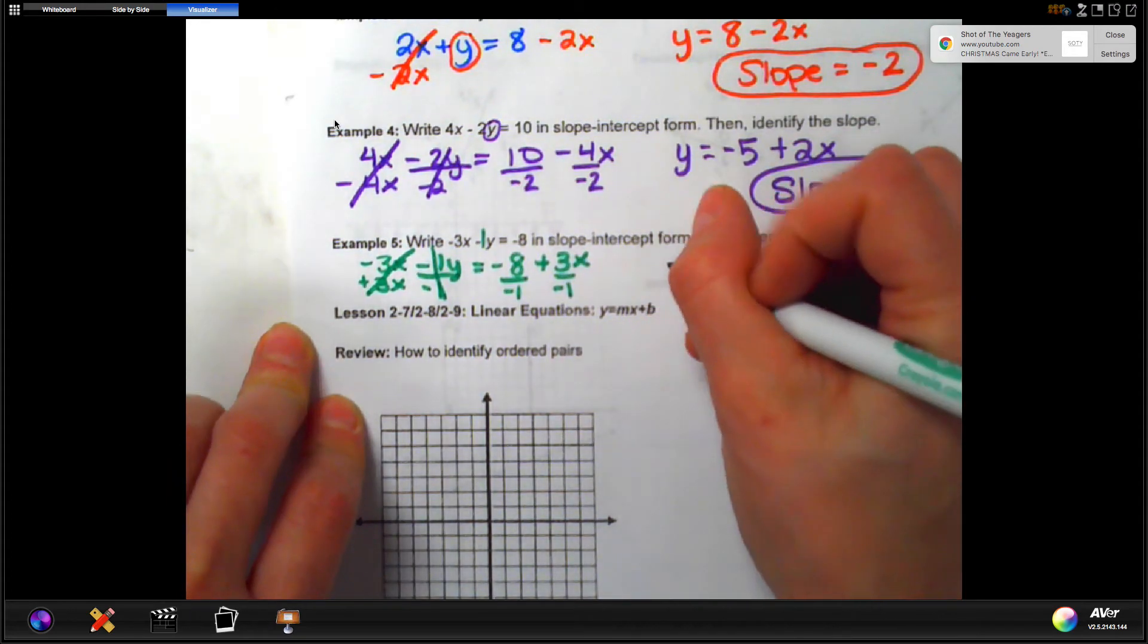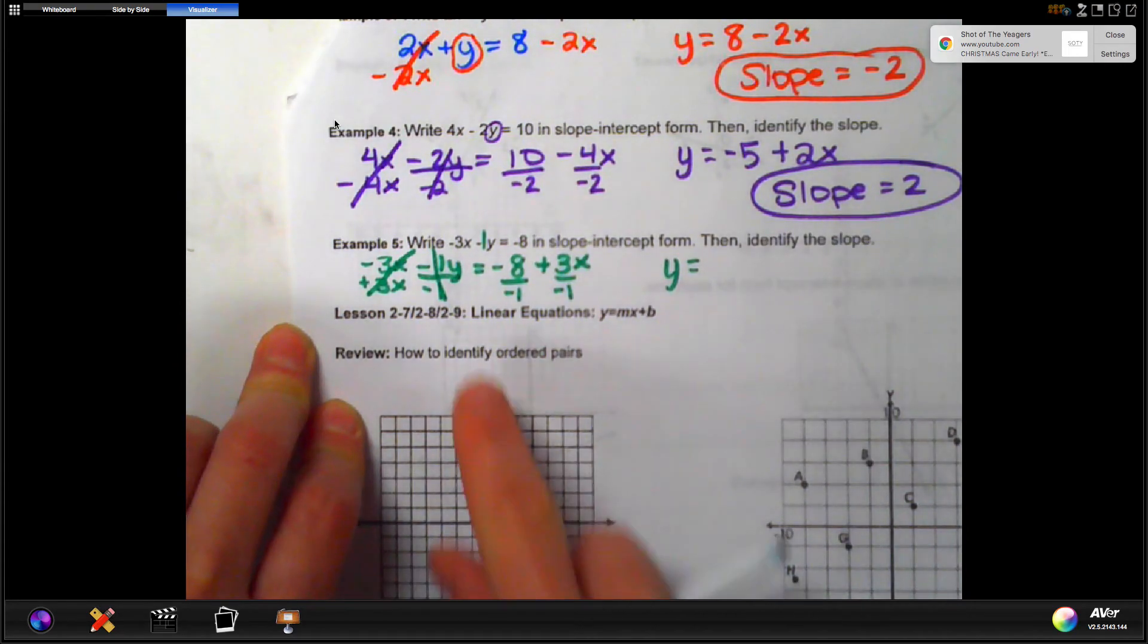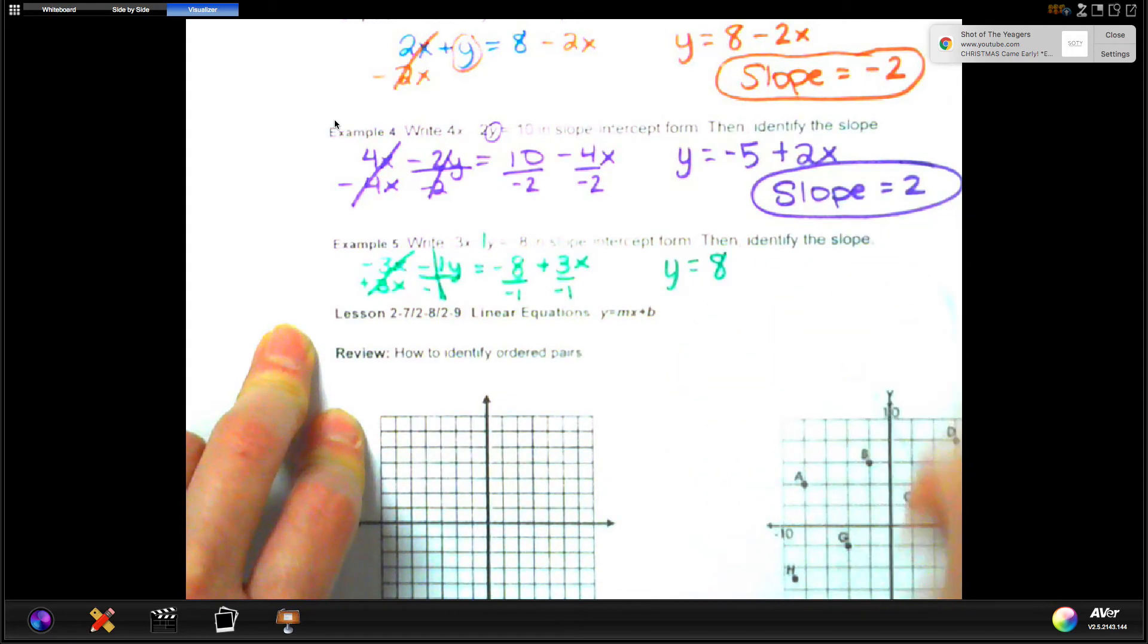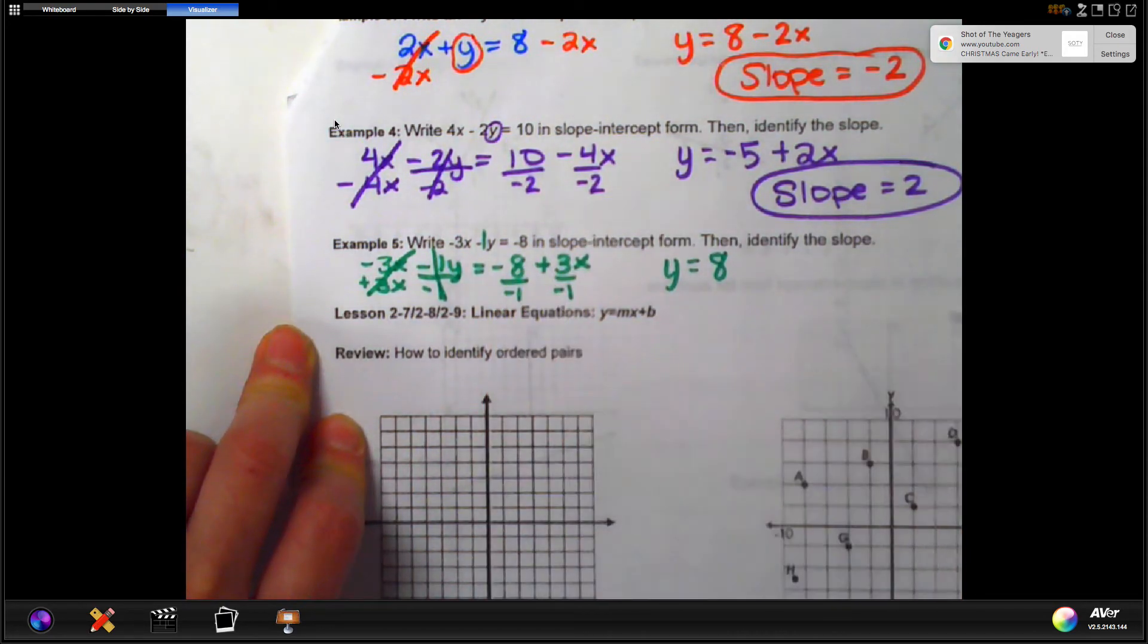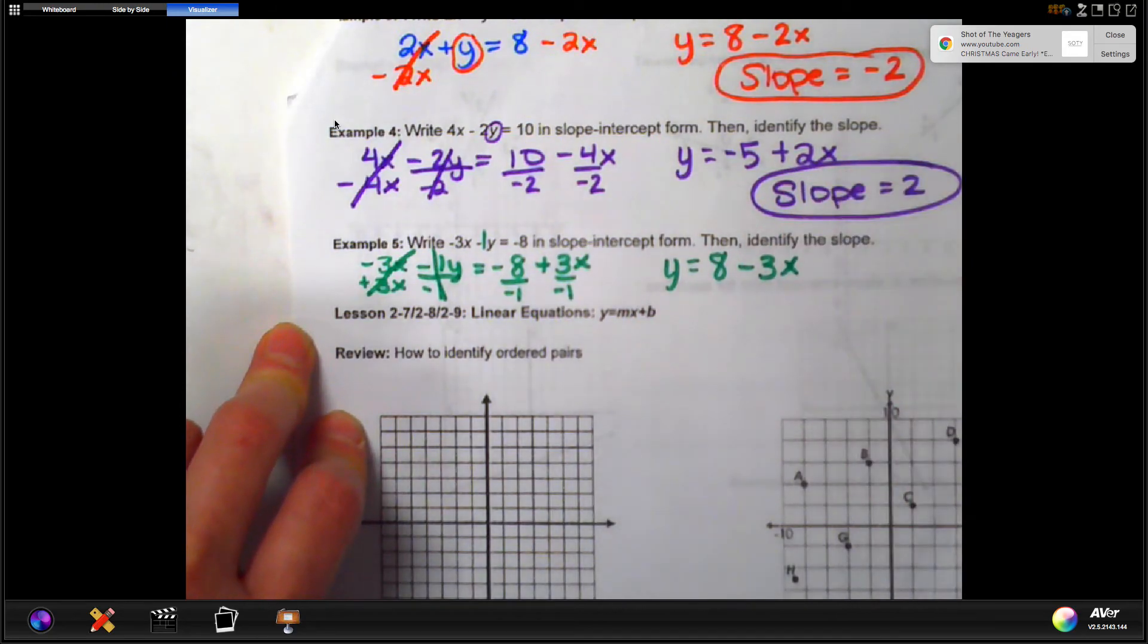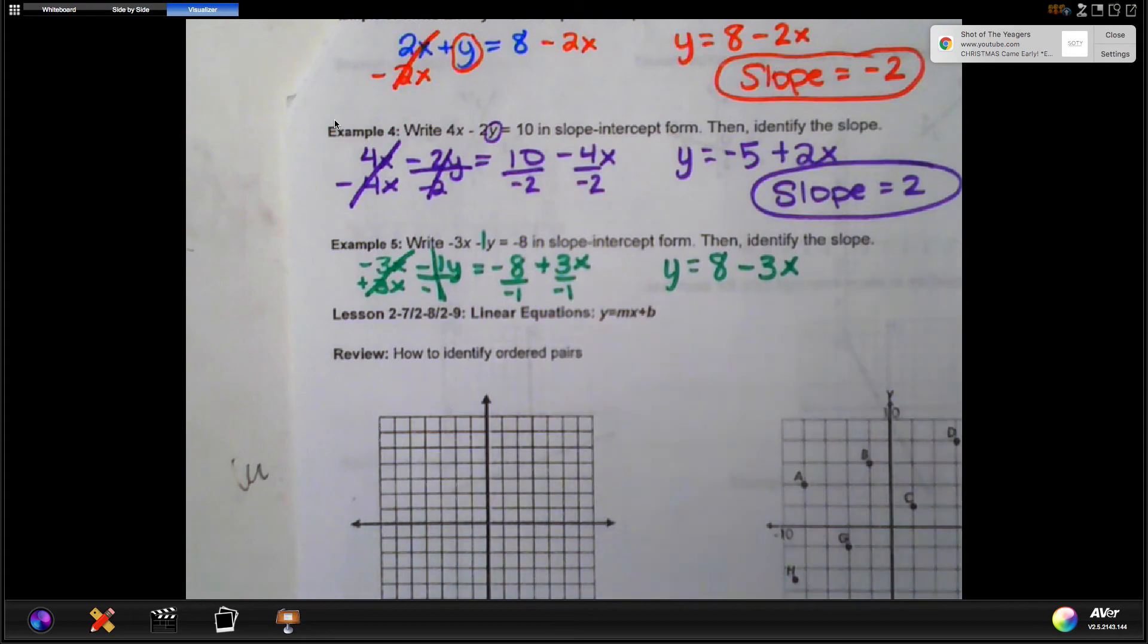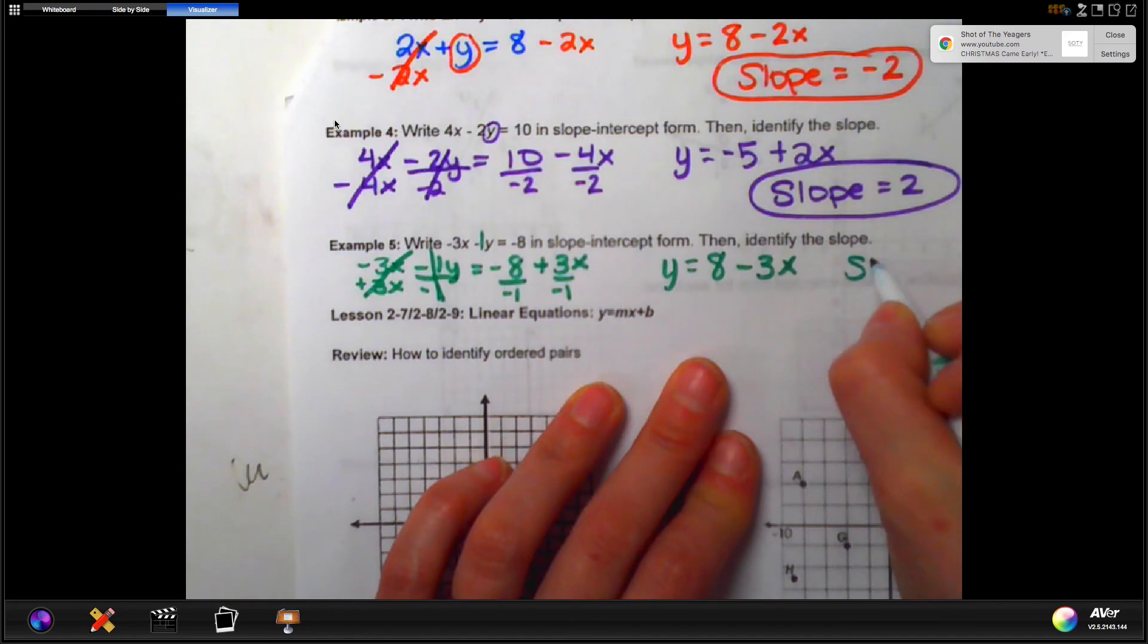Now, we get y. That's all by itself on the left side. Great. That's what we wanted. Negative 8 divided by negative 1 would be positive 8. And then, this is now a positive 3 divided by negative 1 is going to give us a negative 3. We can write it down as a minus 3 and put the x back on. So, y is alone, meaning this is now in slope-intercept form. We look for the number next to our x. So, our slope this time is going to be negative 3.